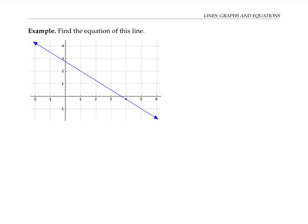One standard format for the equation of a line is y equals mx plus b. Here m represents the slope, and b represents the y intercept, the y value where the line crosses the y axis.